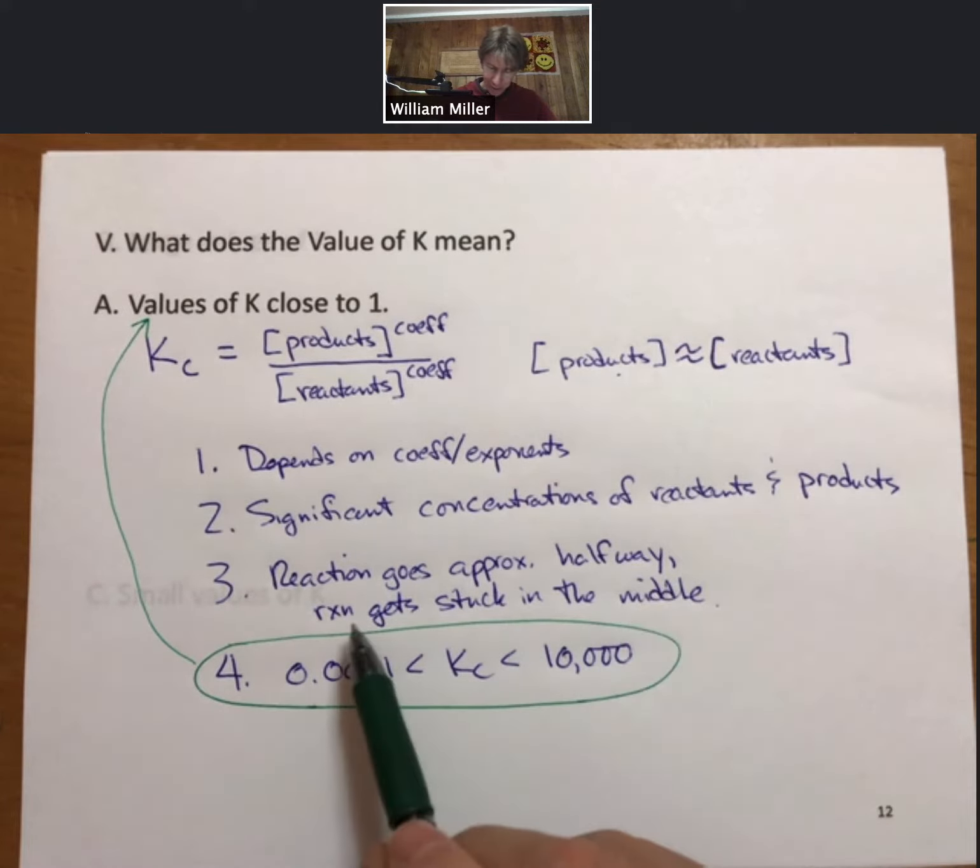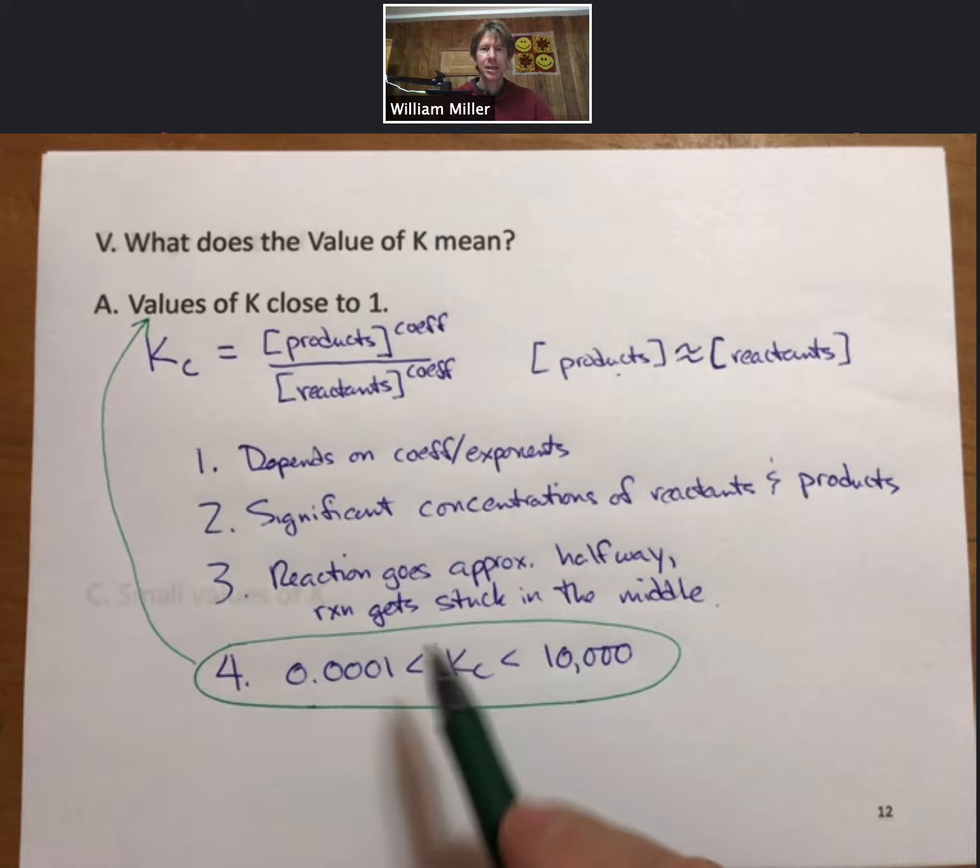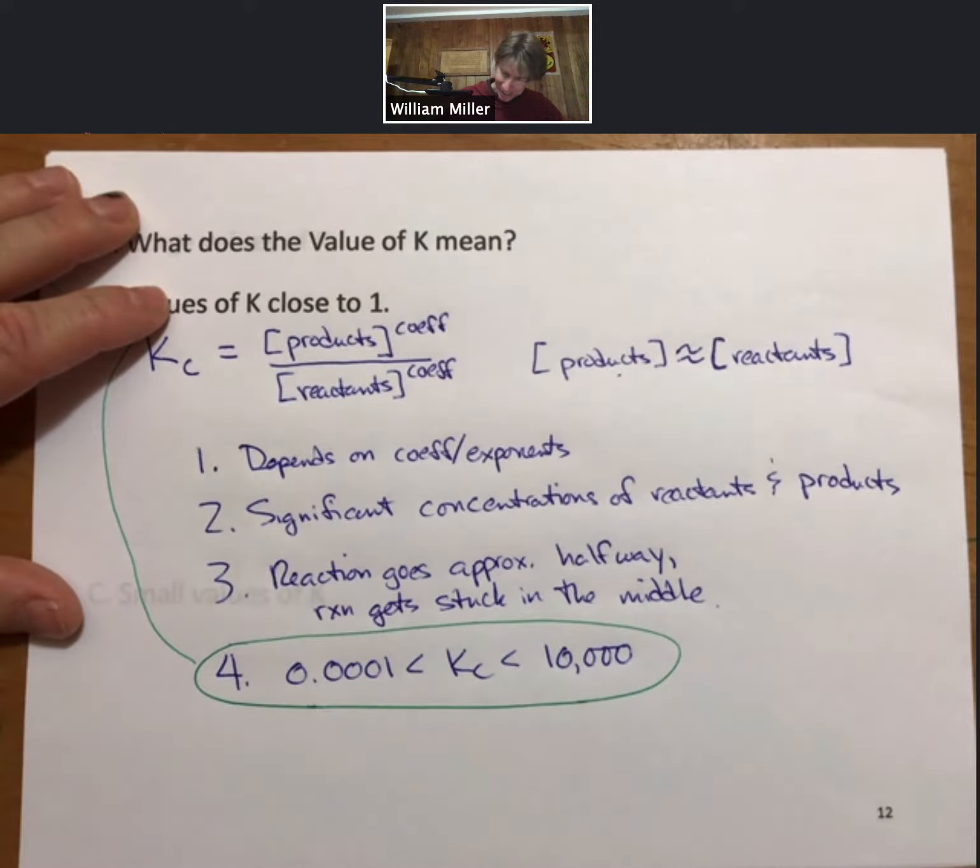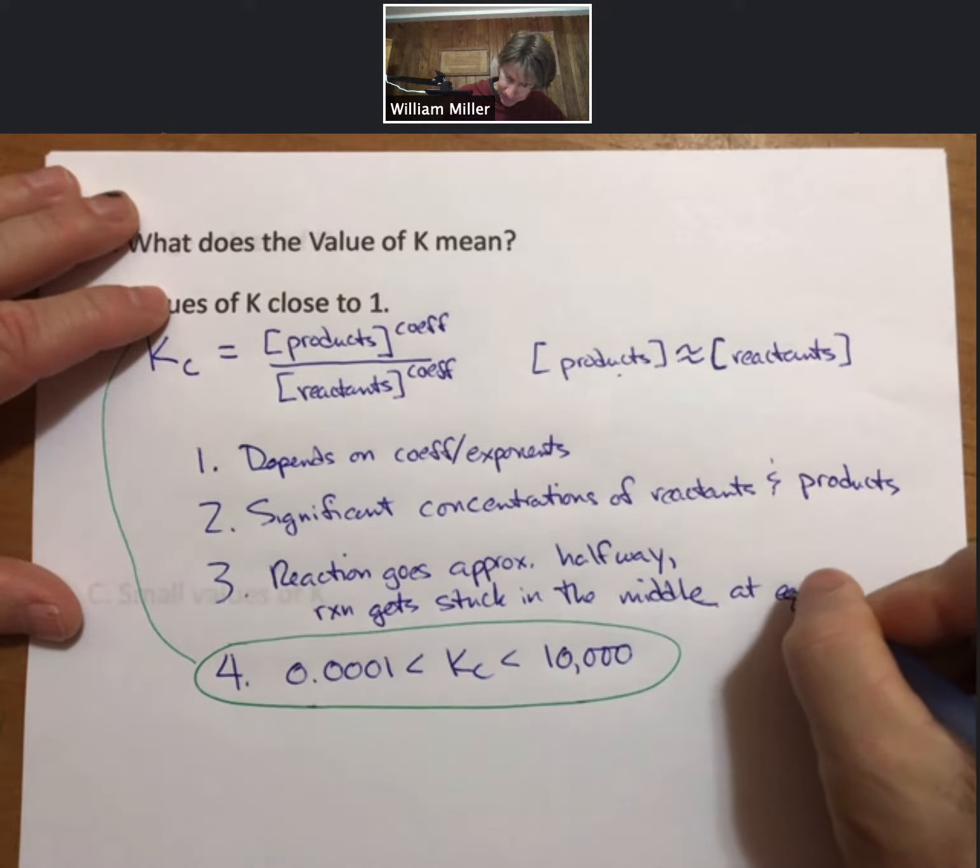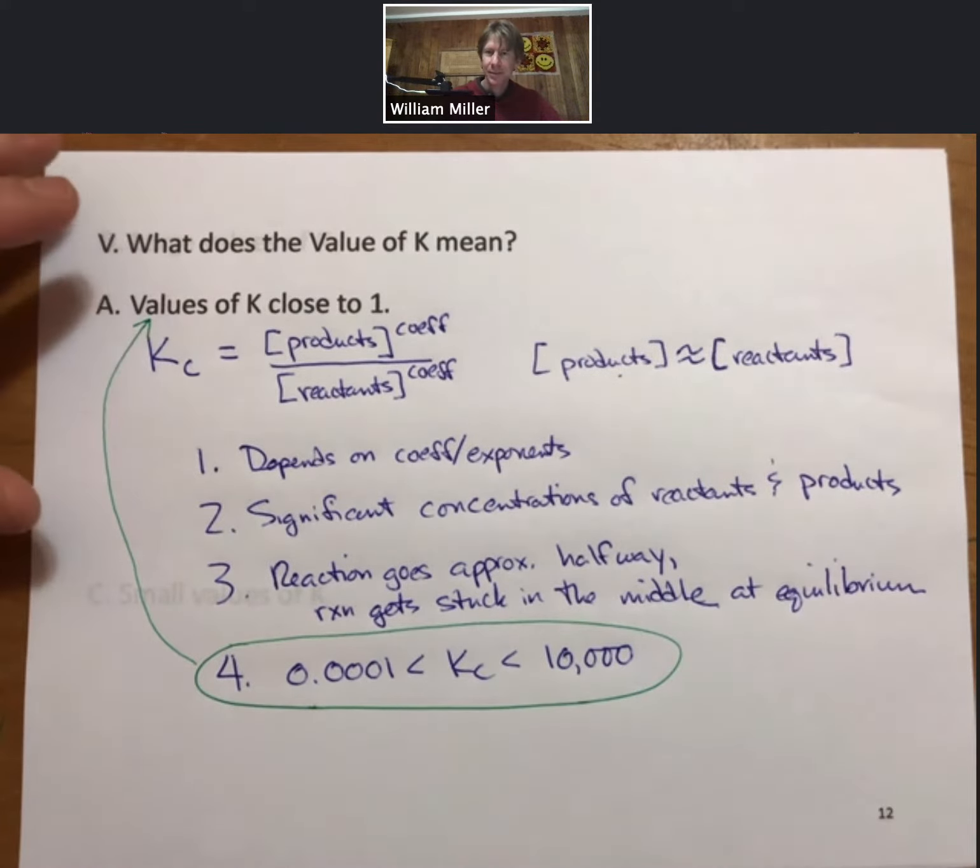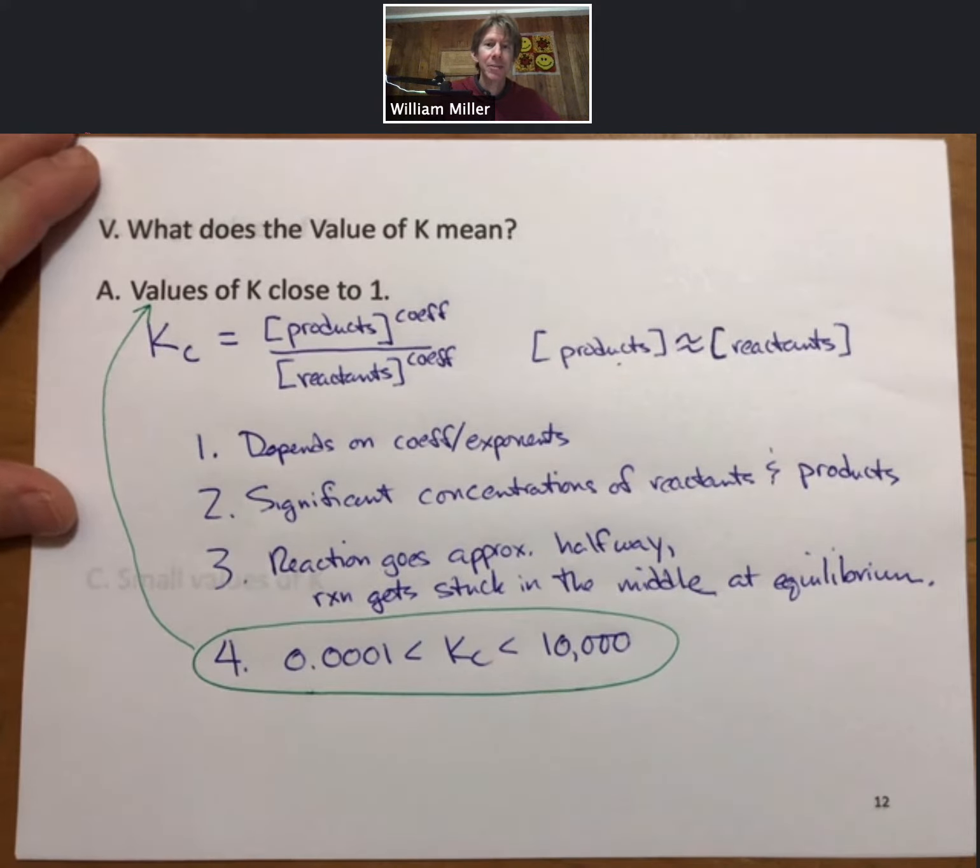Reaction goes approximately halfway, reaction gets stuck in the middle at equilibrium. Remember, these are all equilibrium constant expressions. And just to touch base with what we said earlier, equilibrium is where all reactions are going because it is the lowest energy state for the reaction.